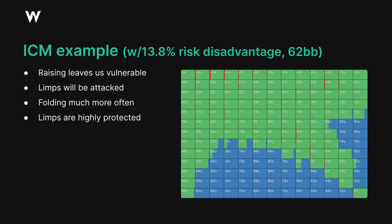While there's almost no raising range at all, the small blind has no desire to play bloated pots anymore, and there's also a huge incentive to make sure the limping range is protected, since it would be very vulnerable to aggression if it weren't. We can see from these two examples that significant ICM pressure causes the small blind to shift heavily towards either a more aggressive raising strategy or a more protected limping strategy, depending on the circumstances.